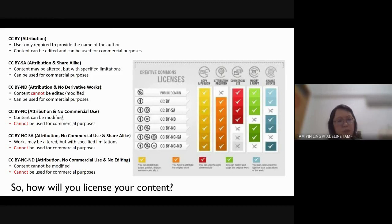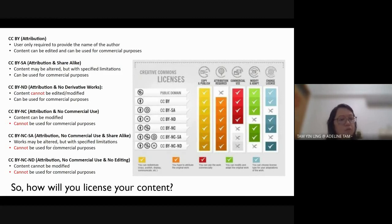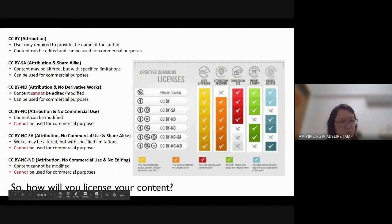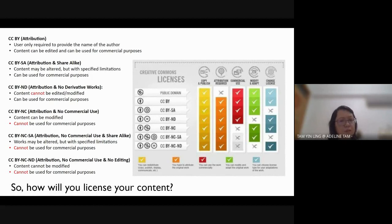CC BY-NC-SA allows changes only with specific limitations and cannot be used commercially. The last type, CC BY-NC-ND, requires you to credit the author, you cannot change the content, and you cannot use it for commercial purposes. For all CC licenses, you must attribute the person who took the photo or created the content, or at minimum state which website you took it from.